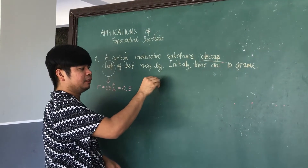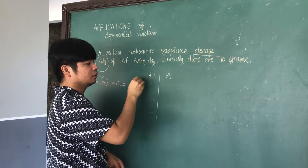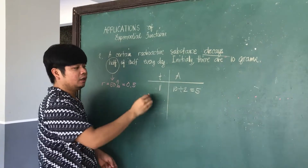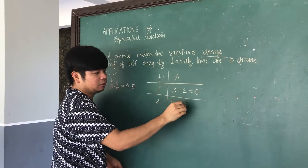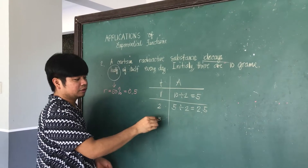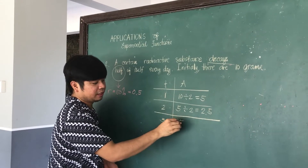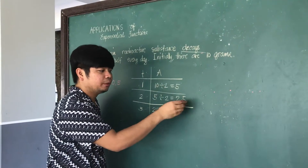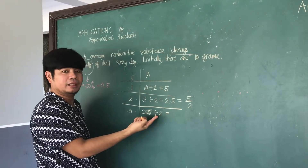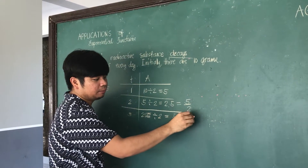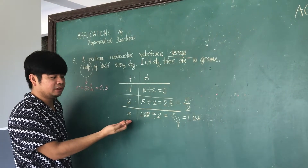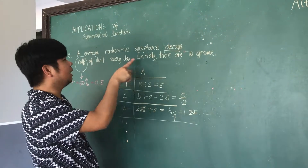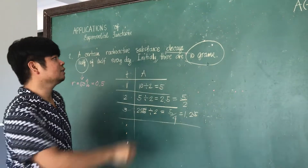On the first day, 10 divided by 2 gives 5 grams. On the second day, 5 divided by 2 gives 2.5. On the third day, 2.5 — which is 5 over 2 — divided by 2 gives 5 over 4, equal to 1.25. It keeps decreasing every day, so there will be a time the substance is no longer present.